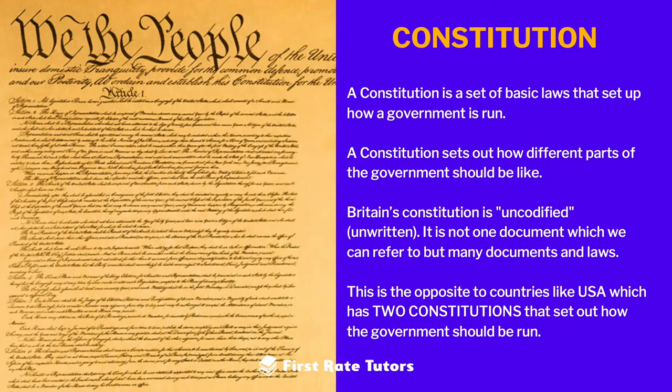You can see an image of this constitution to the left. Britain's constitution is not one document which we can refer to but actually several documents and several laws. This is of course opposite to countries like the USA which is governed by one main constitution setting out how the government should be run. Make sure also you check out our videos that look at how the US is set out and how its constitution operates.